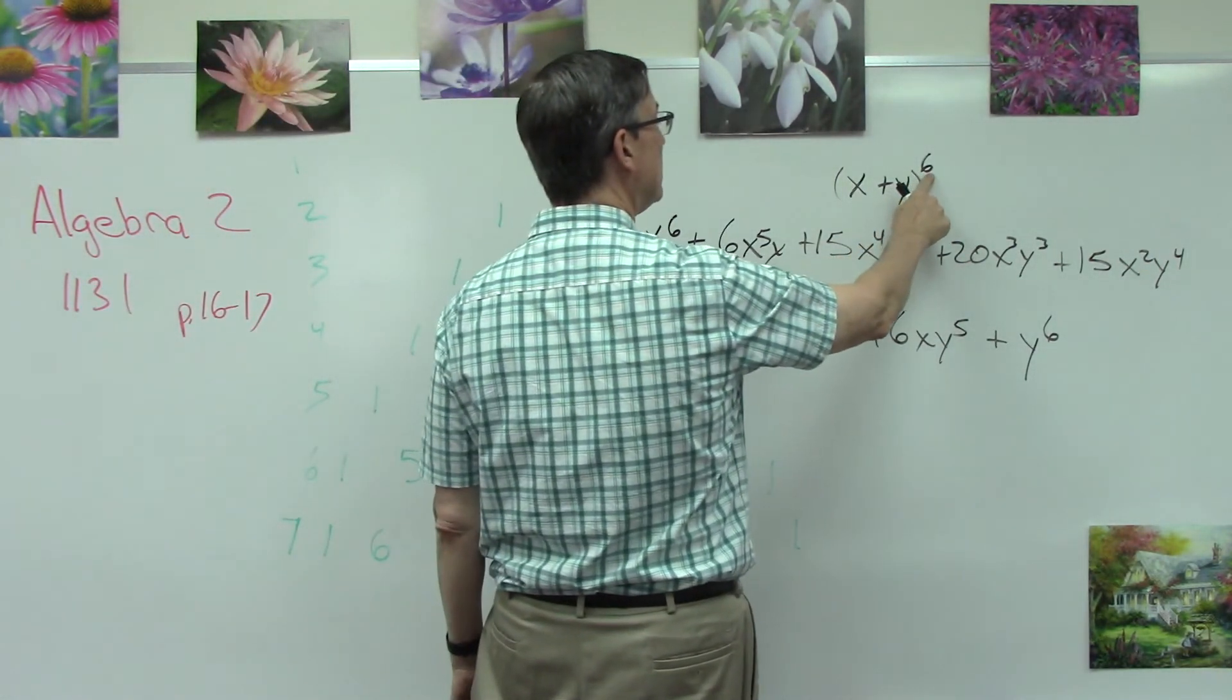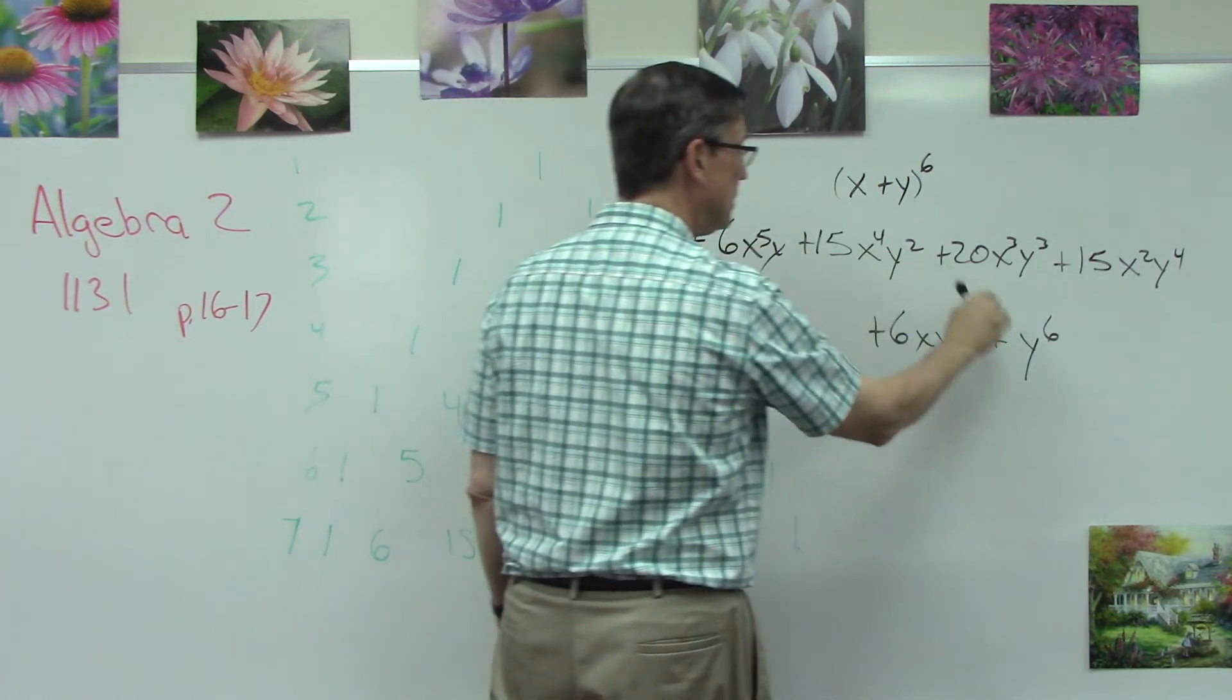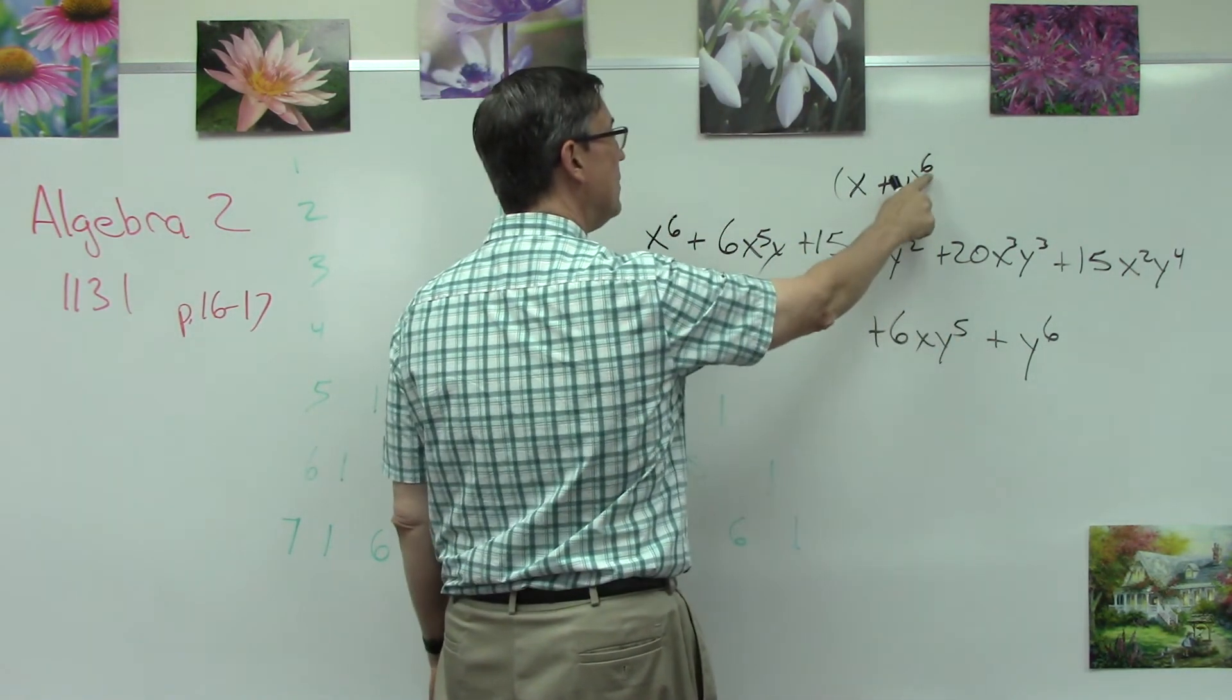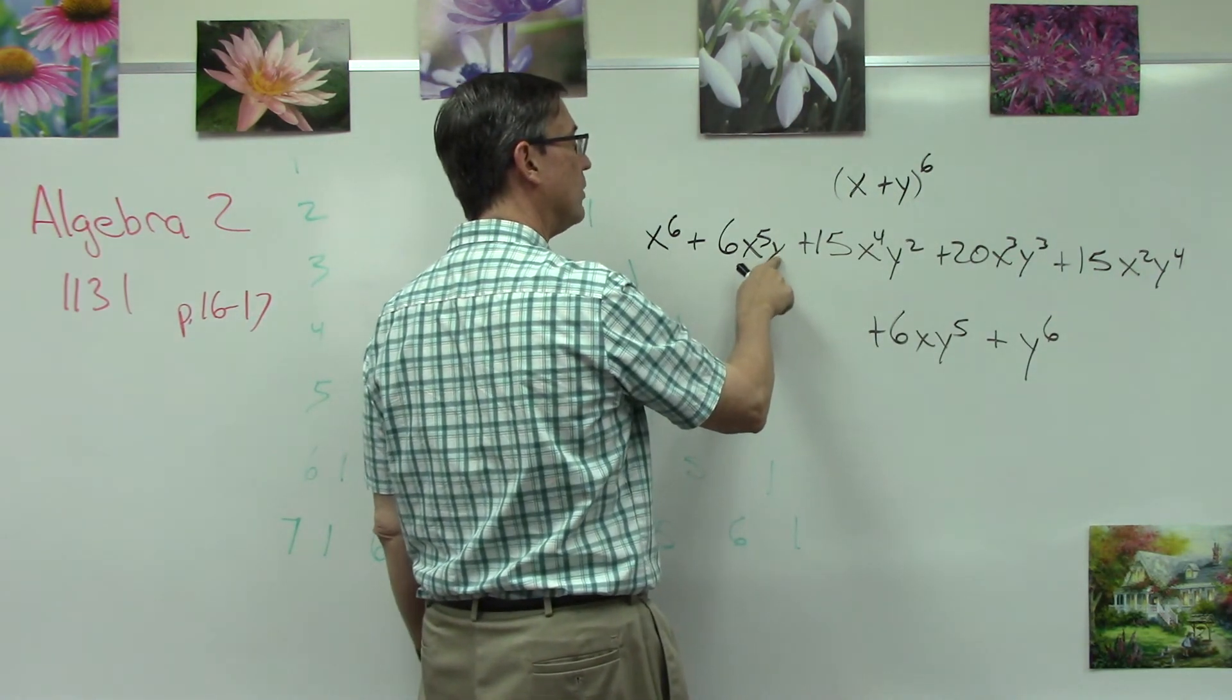The exponent here is the starting exponent on the first term x. It decreases until it's gone. And then the six is also where we're headed with the y. So we start with y to the one, two, three, four, five, y to the sixth. There's a lot of patterns like this in math, and they actually kind of make it easy.